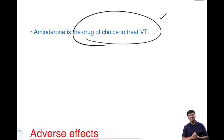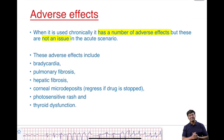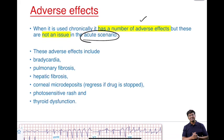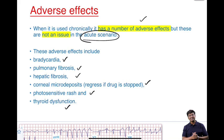Amiodarone is considered the drug of choice to treat ventricular tachycardia. When given for the long term, it is associated with several adverse effects including bradycardia, pulmonary fibrosis, hepatic fibrosis, corneal microdeposits, photosensitivity rash, and thyroid dysfunction. These adverse effects are associated with long-term use of amiodarone.